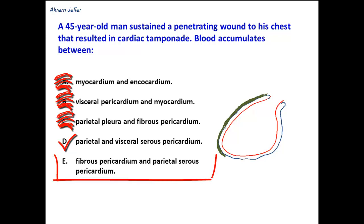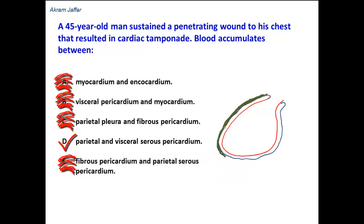Let's look at option E: fibrous pericardium and parietal serous pericardium. This option is also incorrect because there is no space for the blood to accumulate here. The parietal layer of the serous pericardium and the fibrous pericardium are fused together and cannot be separated.